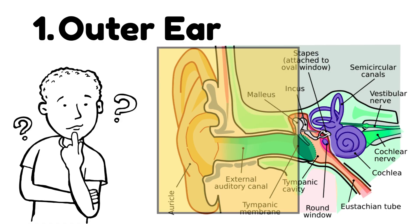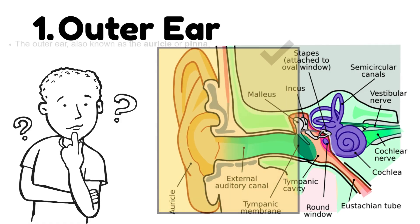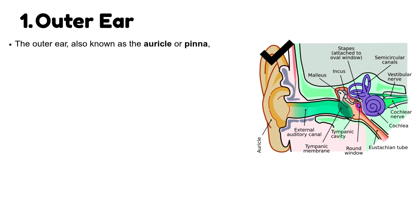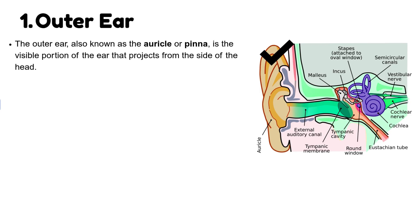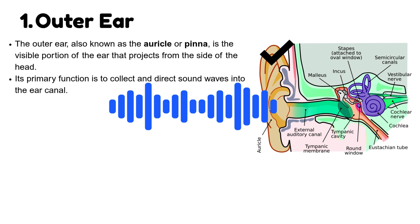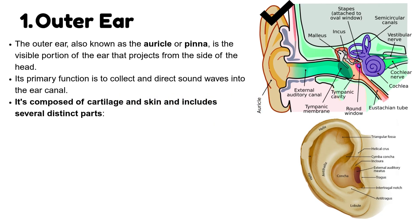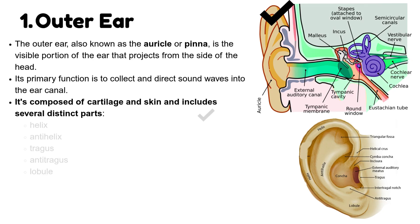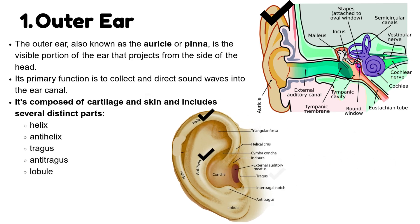Number 1: Outer ear. The outer ear, also known as the auricle or pinna, is the visible portion of the ear that projects from the side of the head. Its primary function is to collect and direct sound waves into the ear canal. It's composed of cartilage and skin and includes several distinct parts: helix, anti-helix, tragus, anti-tragus, and lobule.